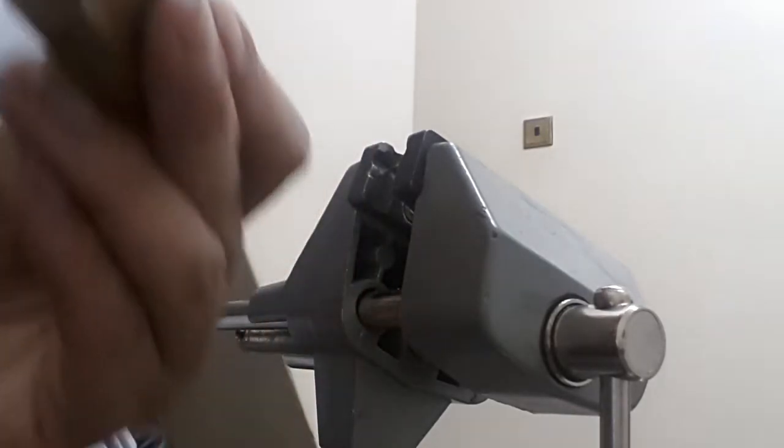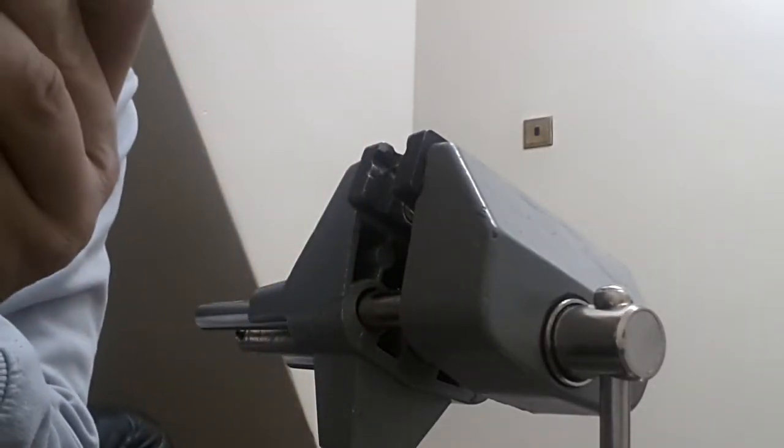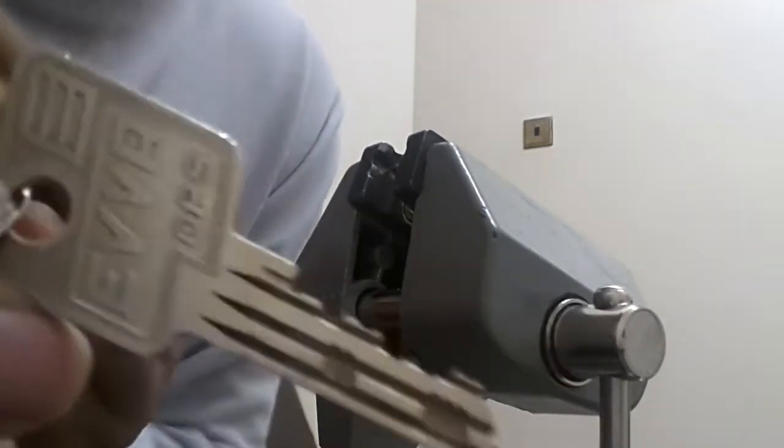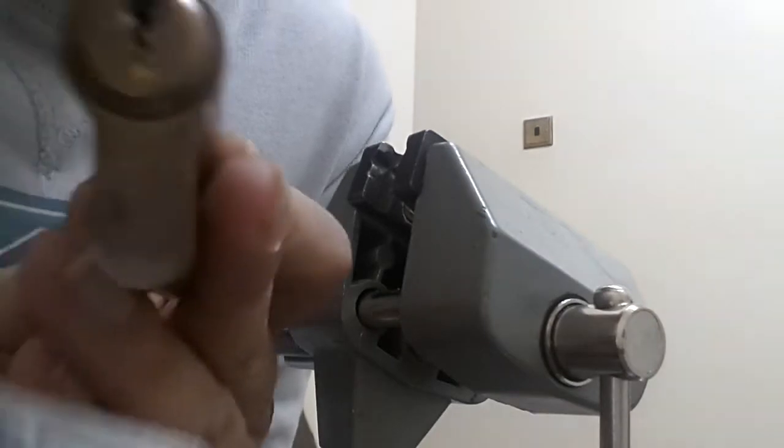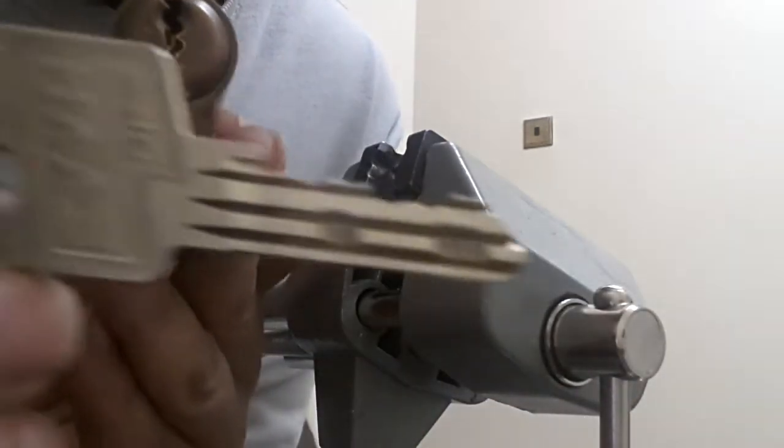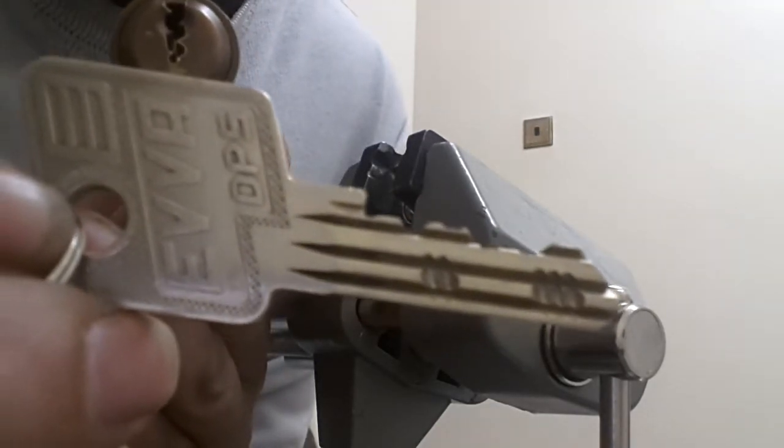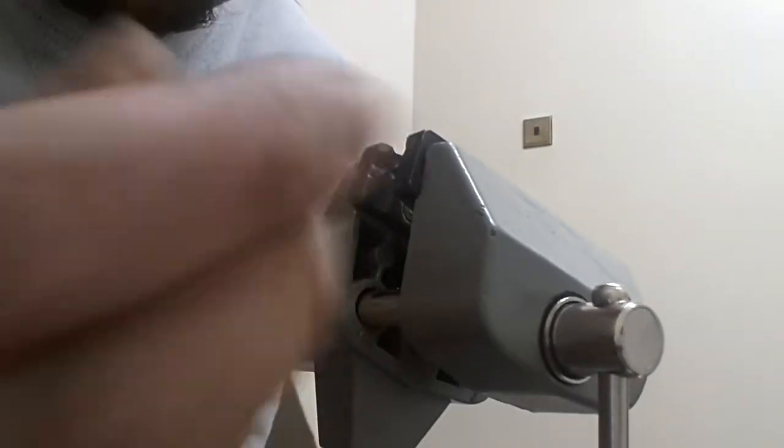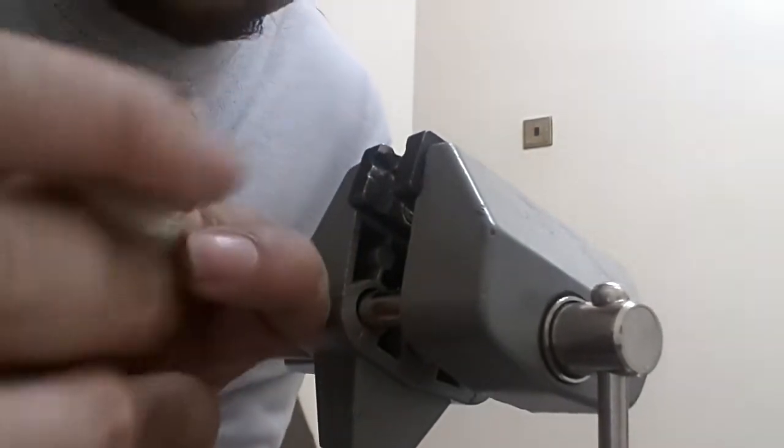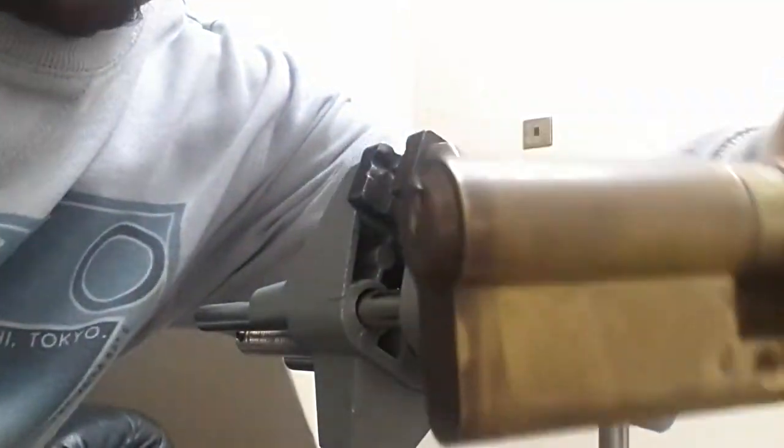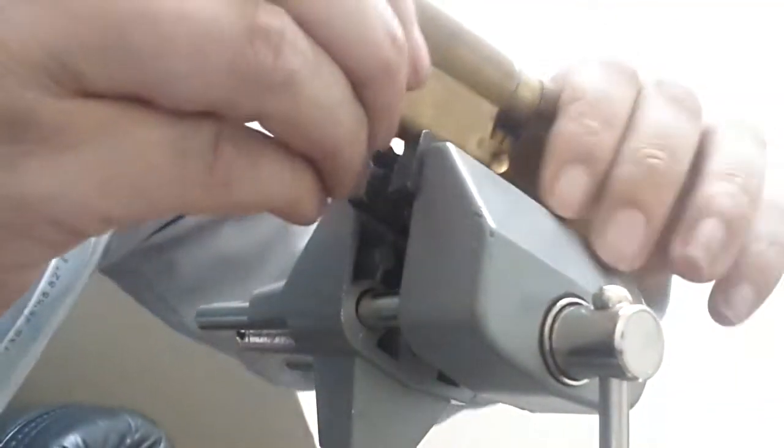Hello UK lock sports. I'll be picking this Avocet DPS lock. As you can see, I know you can't call out the Avocet there because it's a bit dirty. Avocet DPS, here is the key. It's got a sidebar in that inside as you can see it's working.